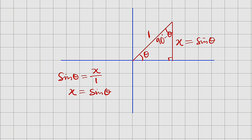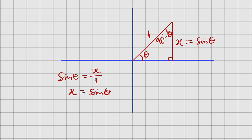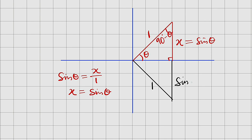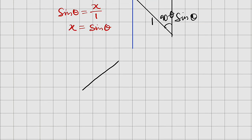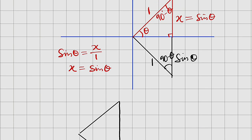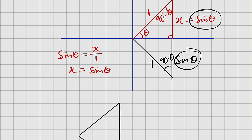Next I would like to form a mirror image of this right triangle in the fourth quadrant. Since they are mirror images of each other, they have the same dimensions — this is one unit, and this side will also be sine of theta. This angle here must be 90 minus theta as well.